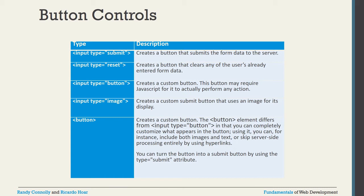The second type attribute value is called 'reset'. What happens with reset — all information whatever you are filling in the form data, with the help of a single button you can clear all of those values. It creates a button that clears any already-entered form data. The third one is input type equal to 'button' — it creates a custom button that may require JavaScript to call any functions or perform any actions.